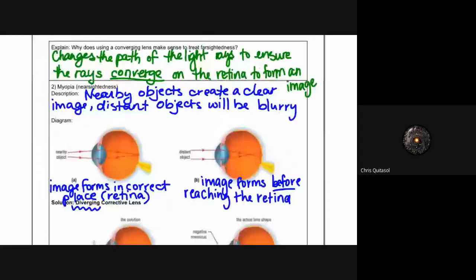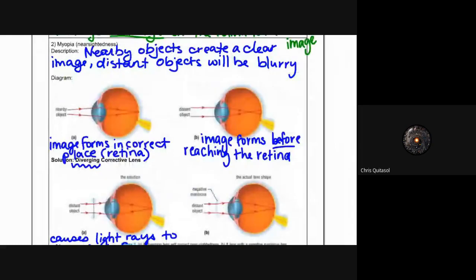With regards to myopia or nearsightedness, which is the predominant majority of people who do have corrective lenses - they are myopic and they have nearsightedness. This is where nearby objects create a clear image but distant objects are blurry. If you take a look at the diagrams again here at the top, the initial lens structure for someone with a normal retina produces an image that's directly on the retina. For someone who is myopic or does have nearsightedness, the image forms before reaching the retina.